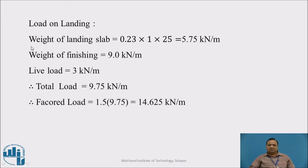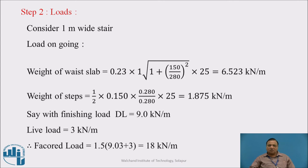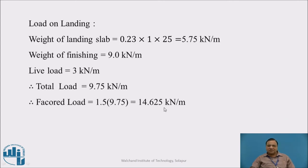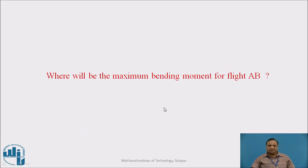Load on landing: weight of landing is 0.23 into 1 into 25 equals 5.75. Including finishing, it is 9 kilonewton per meter. Live load is 3 kilonewton per meter. Total load is 9.75 kilonewton per meter, so factored load is 14.625. Please note, factored load on ongoing portion is 18 whereas for landing portion is 14.625.